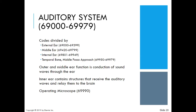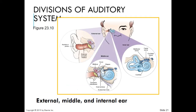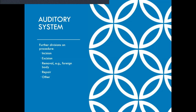Your operating microscope is found under code 69990. We're going to talk about the division of the auditory system: external, middle, and internal ear. You can see the picture on page 580 of your step-by-step manual. Further divisions on procedure are incision, excision, removal of foreign body, repair, and other. You're going to see that on page 581. Each subheading is further divided according to procedure, such as introduction, incision, excision, removal of foreign body, repair, and other procedures.